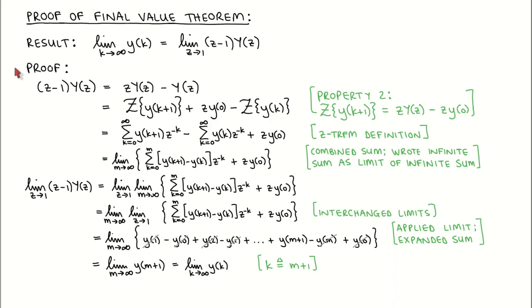In the first line, we separate Z minus 1 times Y of Z into two terms. We then use the advanced property of the Z-transform to write the first term as the Z-transform of the signal Y, advanced by 1 time step, plus Z times Y of 0. We use the Z-transform definition in this line, and in the next line, we combine the two infinite sums and write the infinite sum as the limit of an infinite sum.